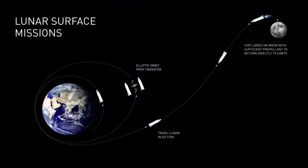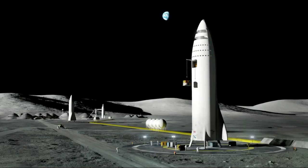Based on the calculations we've done, we can actually do lunar surface missions with no propellant production on the surface of the Moon. If we do a high elliptic parking orbit for the ship and re-tank in a high elliptic orbit, we can go all the way to the Moon and back with no local propellant production on the Moon.